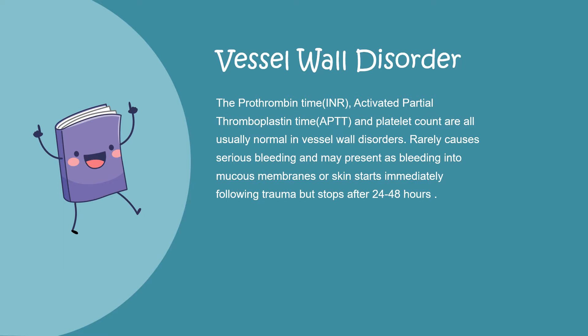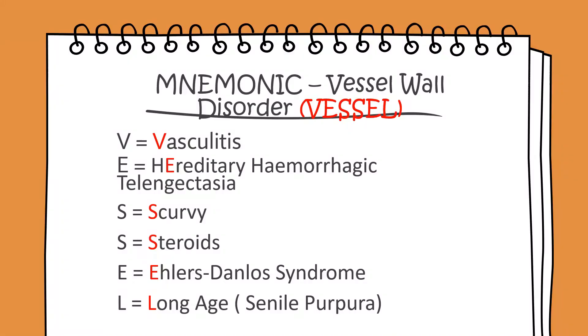Starting with vessel wall disorders: the prothrombin time (which gives us the INR — the International Normalized Ratio — a measure of the extrinsic pathway), the activated partial thromboplastin time (aPTT — a measure of the intrinsic pathway), and platelet count are all usually normal in vessel wall disorders. Vessel wall disorders rarely cause serious bleeding and may present as bleeding into the mucous membranes or skin. Bleeding starts immediately following trauma but usually stops after 24 to 48 hours and is not very aggressive.